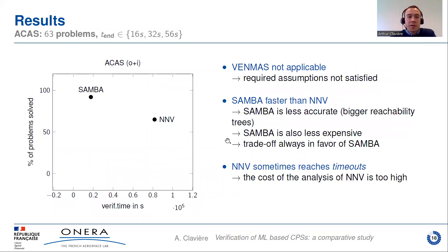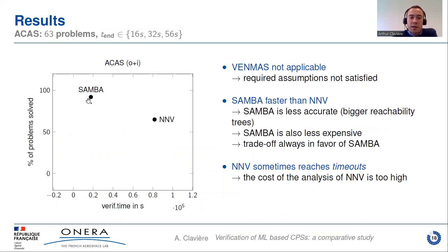For the ACAS results, VenMAS is not applicable because the required assumptions are not satisfied. This time SAMBA is better than NNV — it is faster and can solve more problems. So the trade-off is now in favor of SAMBA. We also note that NNV sometimes encounters timeouts due to its higher cost compared to SAMBA.